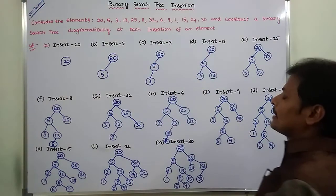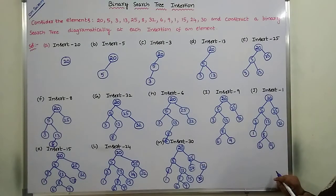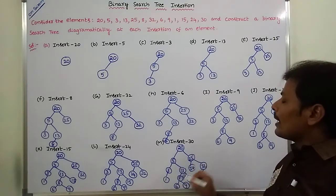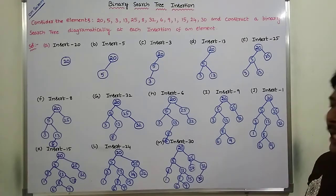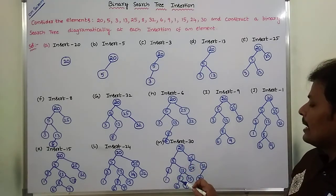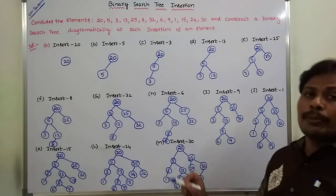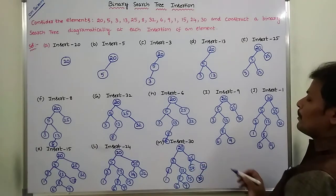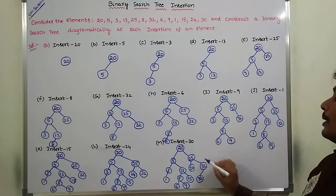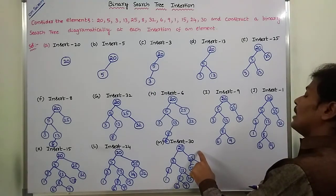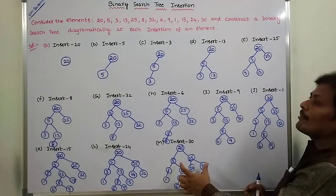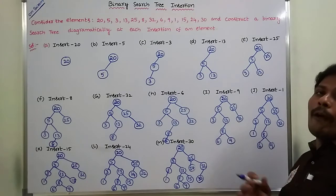All the elements are inserted. This is the final binary search tree we are getting after inserting all the elements. Observe that all the elements in the left subtree — 5, 3, 1, 13, 8, 6, 9, 15 — are less than the root node value 20. The elements in the right subtree — 25, 30, 24, 32 — are greater than the root node value 20. So this tree satisfies the binary search tree property. Hence, this is the final binary search tree after inserting all the elements.